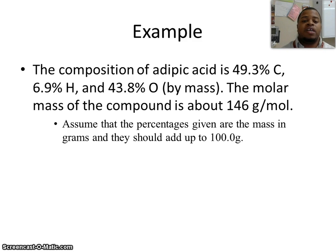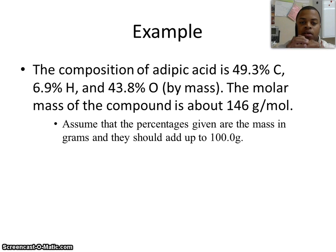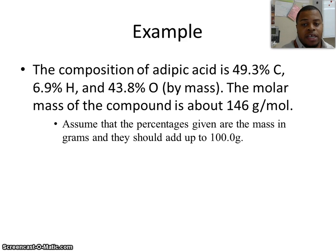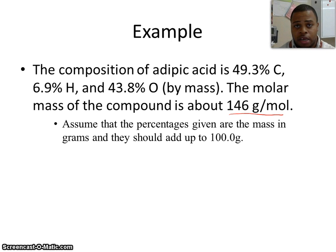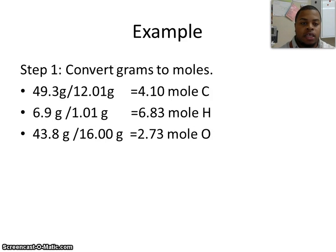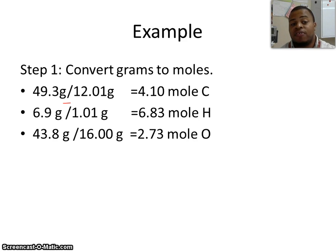The composition of adipic acid is 49.3% carbon, 6.9% hydrogen, and 43.8% oxygen by mass. So it's looking at the overall — if we took this compound and decomposed it, we're able to look at it and find how much of each of these things we actually have. It also gives us another piece of information: the molar mass of this compound is 146 grams per mole, which we're going to save for last. Since we don't have actual masses but we know this is percentage by mass, we're going to assume that the percentages are the same number in grams — so 49.3 grams, 6.9 grams, and 43.8 grams.